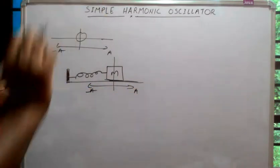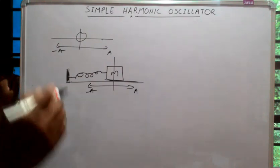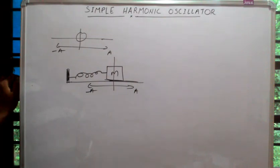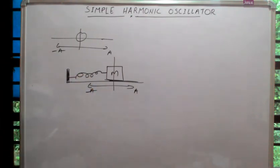The simple harmonic oscillator is one of the most important topics in modern physics, which illustrates the basic concepts and methods in quantum mechanics. There are various applications in other subjects as well, such as solid state physics, molecular spectroscopy, etc. So a thorough study of the simple harmonic oscillator is necessary for a student of modern physics.